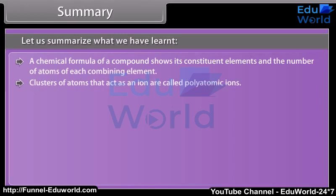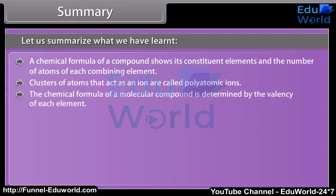Clusters of atoms that act as an ion are called polyatomic ions. The chemical formula of a molecular compound is determined by the valency of each element.